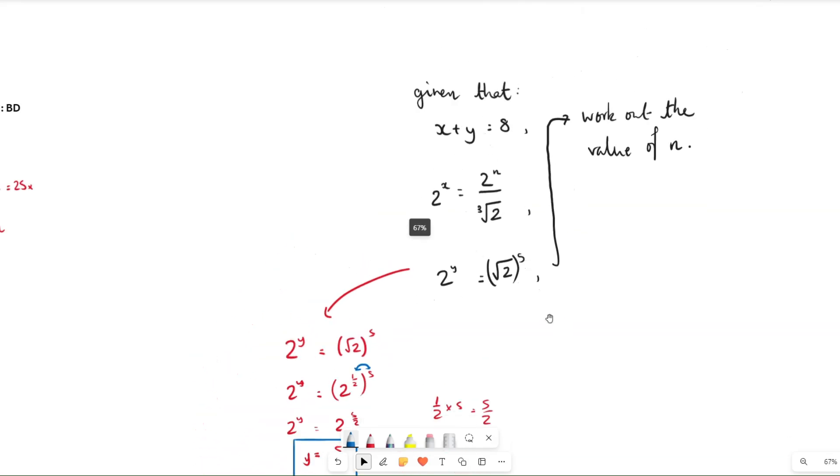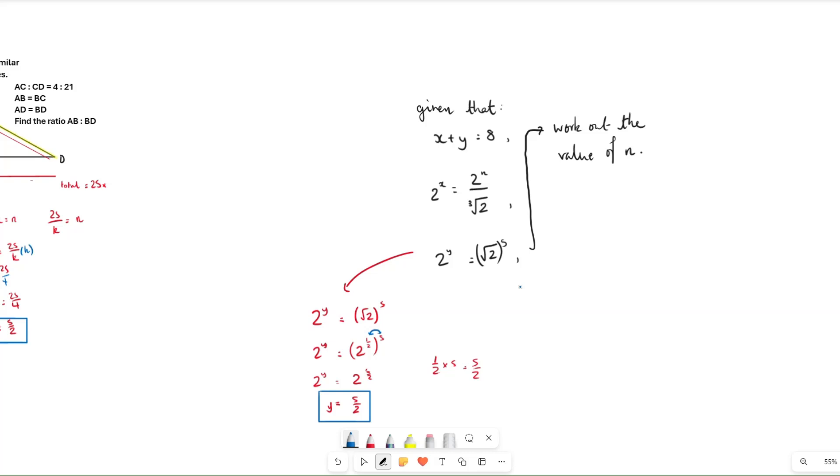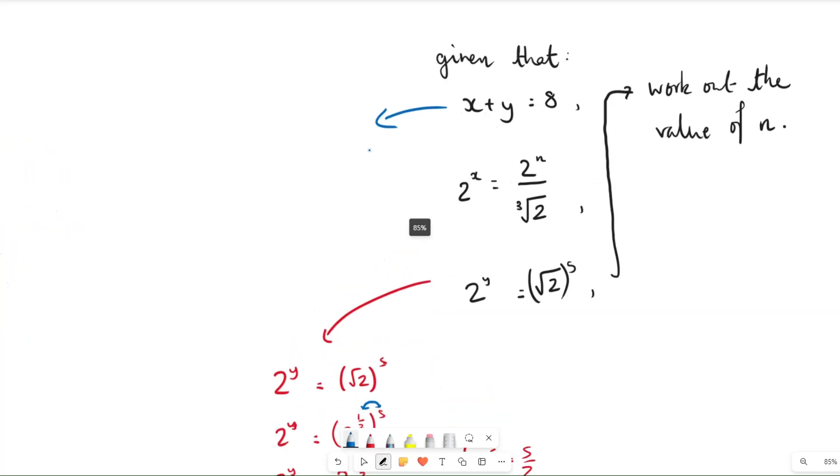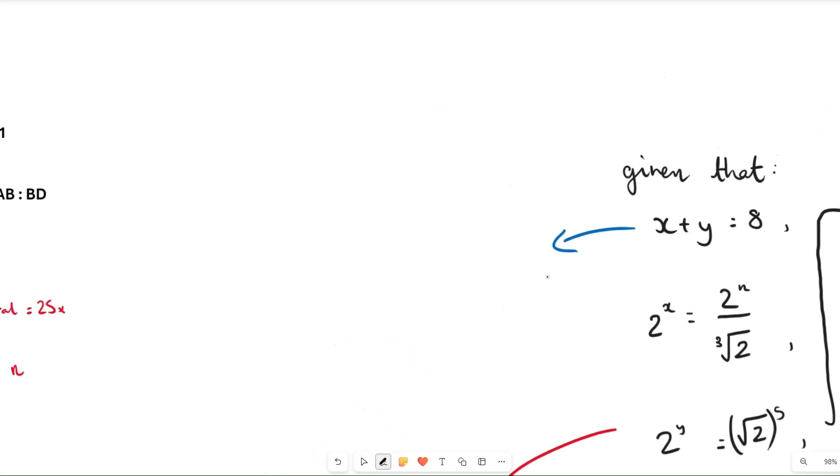So what we're going to do is we're going to use the first equation we were given here. Since we know that y equals 5 over 2, we can work out what x is. We just substitute y in. So x plus 5 over 2 equals 8. x equals 8 minus 5 over 2.